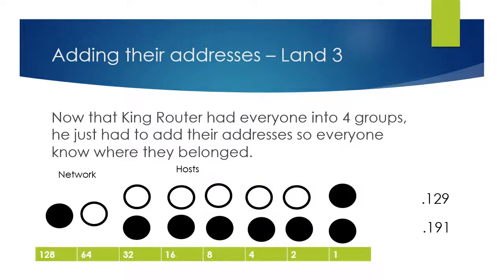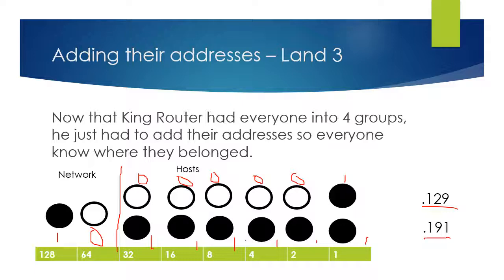Now let's look at LAN 3. Separating our network and our hosts, we have protectors 1 and 0. Adding 128 + 1 gives us 129 for the starting address, and 128 + 32 + 16 + 8 + 4 + 2 + 1 gives us 191 for the end. So addresses in LAN 3 range from .129 to .191.